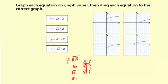I'm just going to put those on this first graph here: (0, 0), (1, 1), (4, 2). Okay, so this would be our graph for y equals square root x.